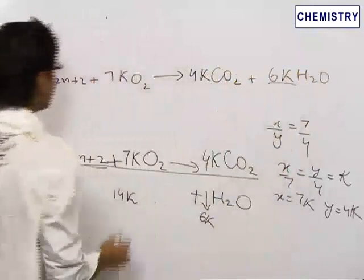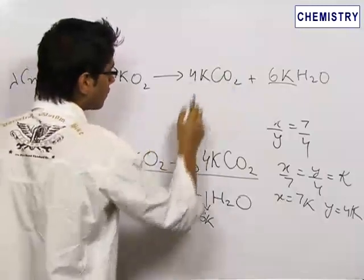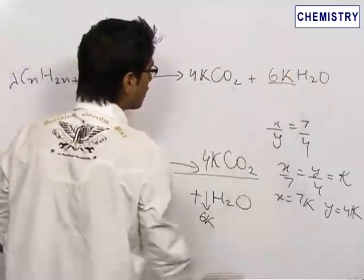We have got this 6k because here we had 14k oxygen. Here we had 4 into 2 into k that is 8k. So here we multiplied this water with 6k.